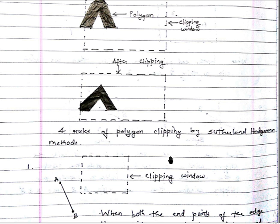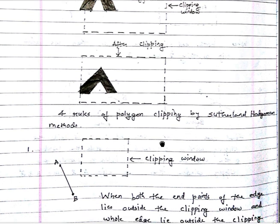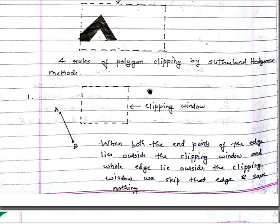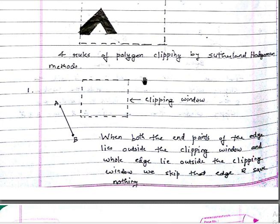So let's take the rules of polygon clipping. There are four rules of polygon clipping by the Sutherland-Hodgman method — actually there are five, and the fifth rule we'll implement directly in the example.